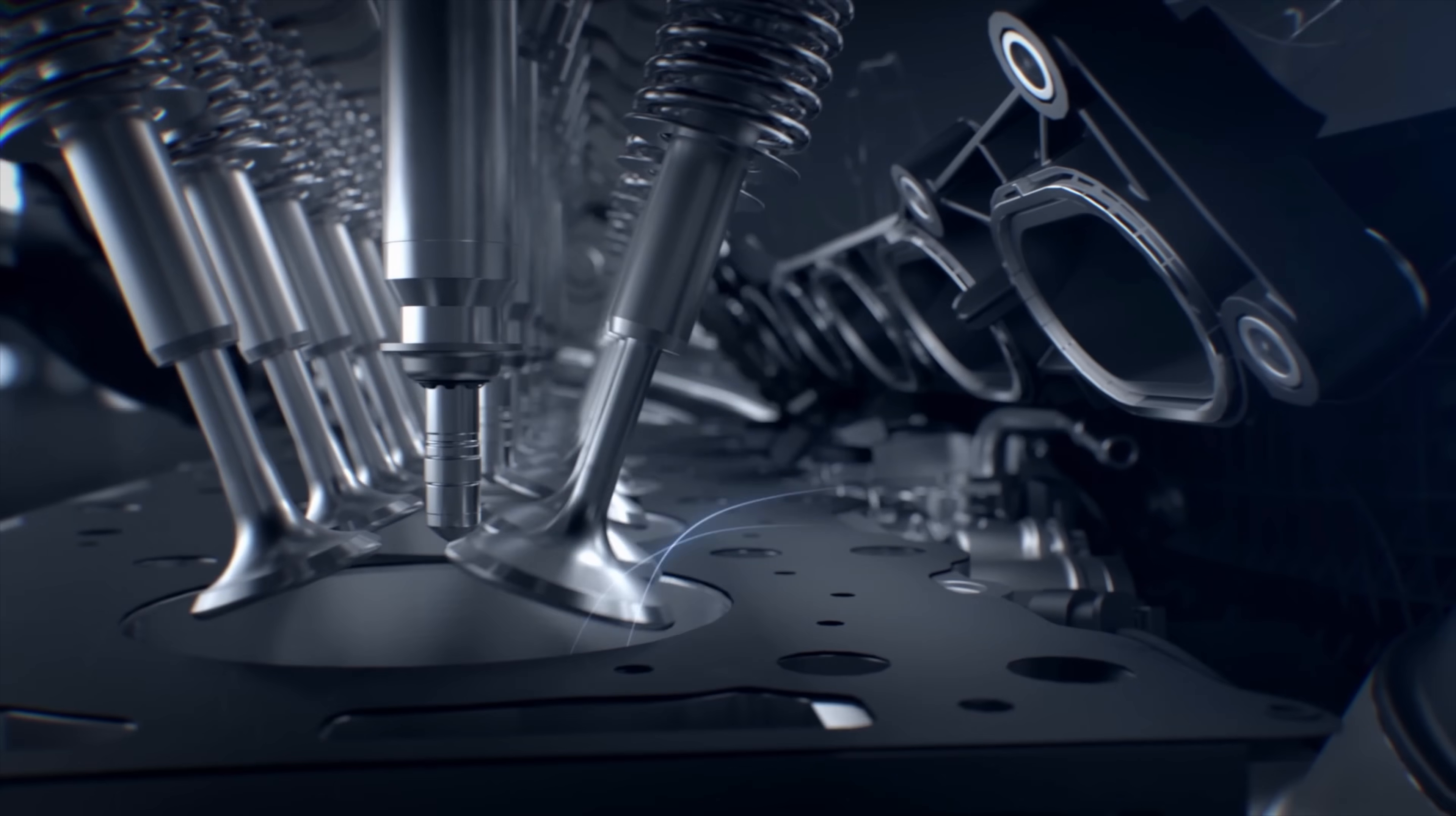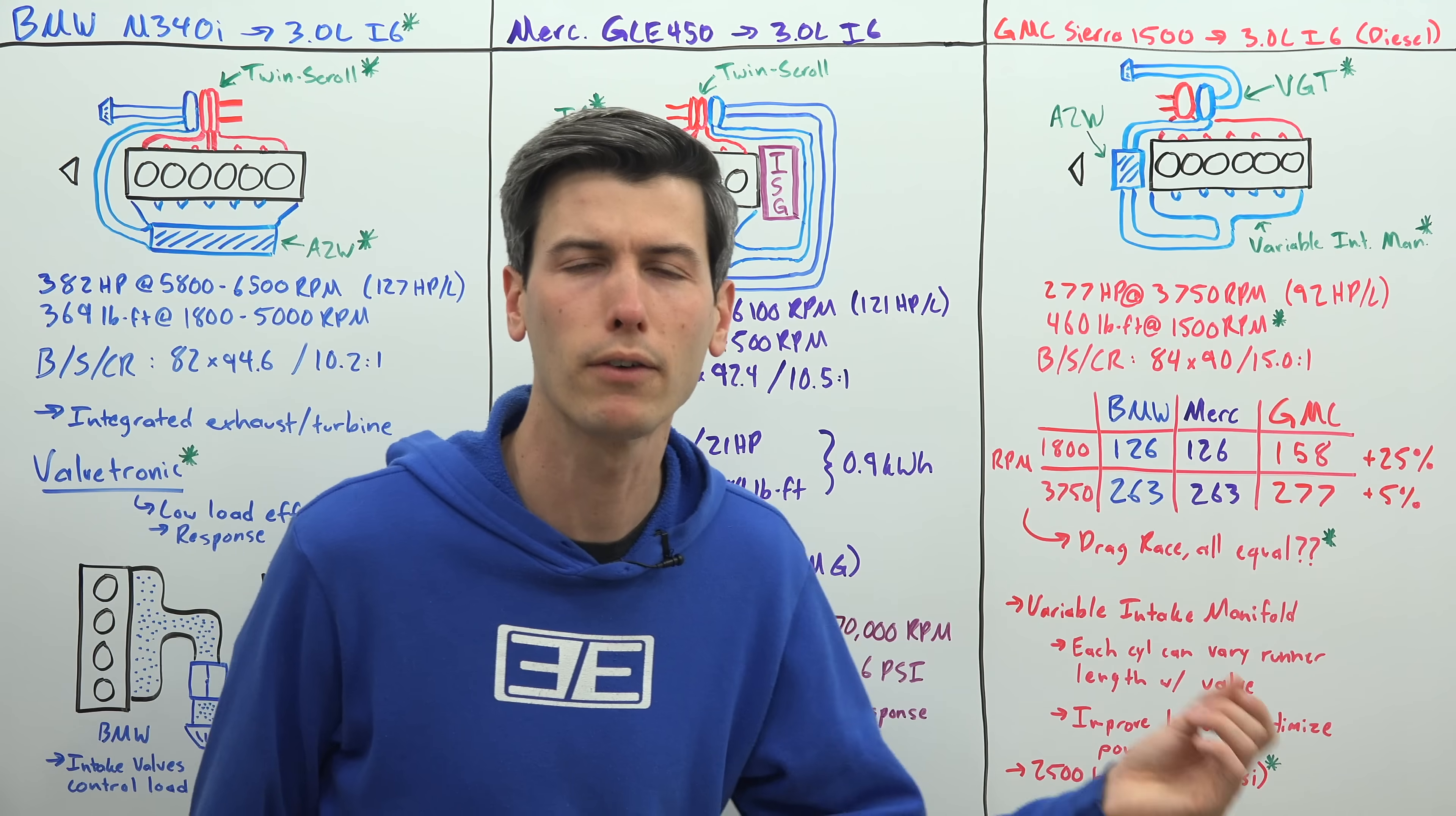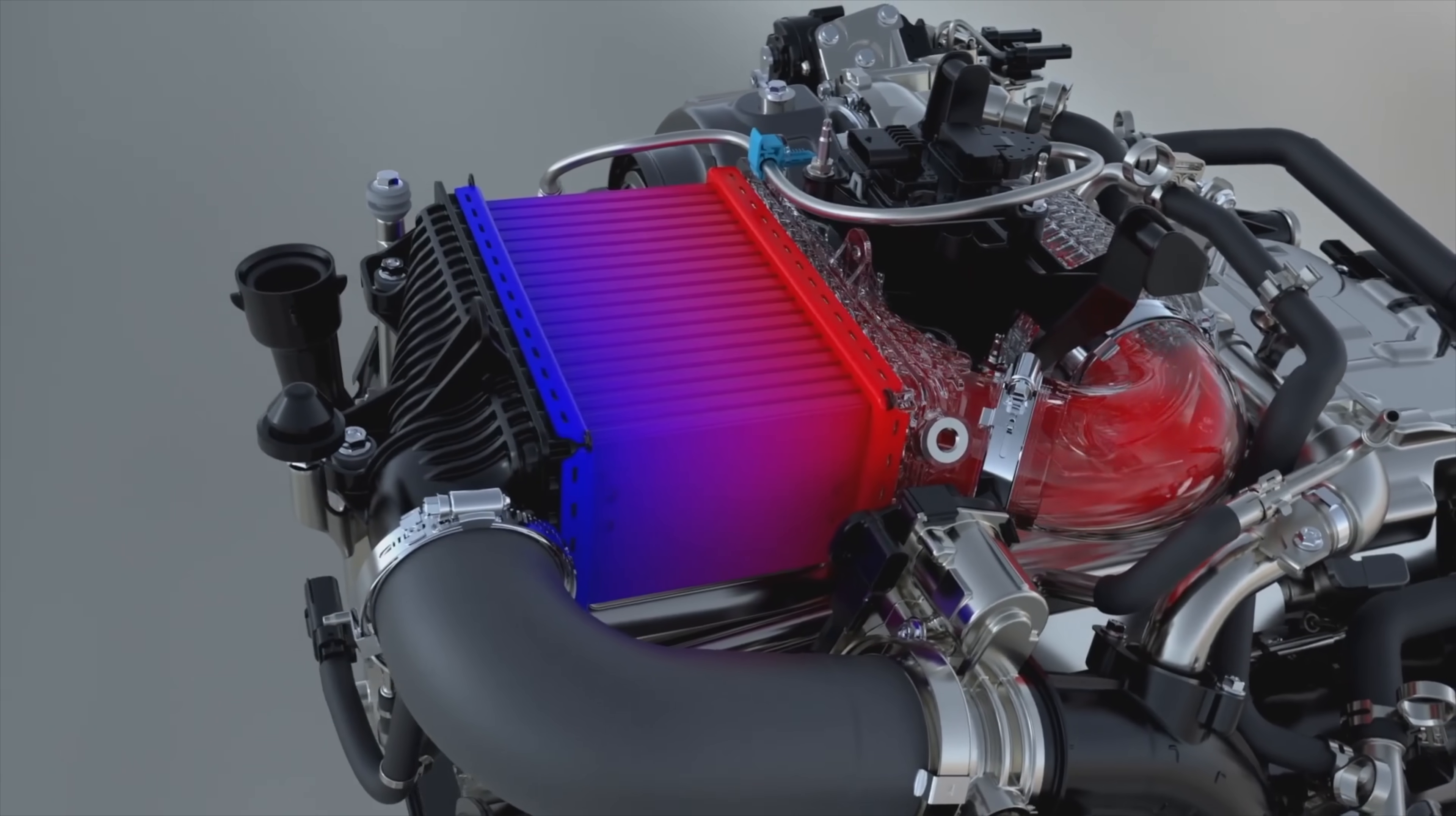Finally the GMC Sierra's diesel engine, and they should get a lot of credit for this engine. The two-wheel drive version of this GMC Sierra with the diesel engine is rated for 30 miles per gallon on the highway, so impressive coming from a truck.